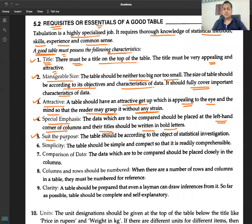Number five: Suit the purpose. The table should be according to the object of statistical investigation. Number six: Simplicity. The table should be simple and compact so that it is readily comprehensible. Number seven: Comparison of Data. The data which are to be compared should be placed closely in the columns.